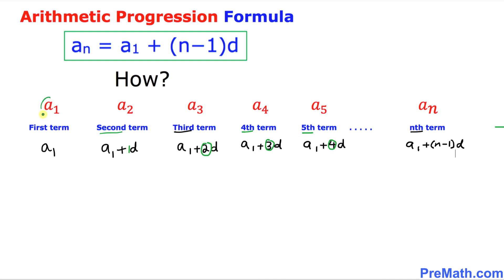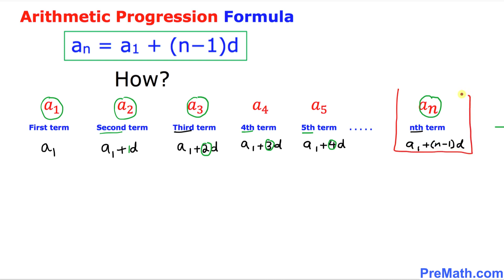We know that the first term is called a sub 1, the second term is a sub 2, the third is a sub 3, and the nth term is called a sub n. That means a sub n equals a sub 1 plus n minus 1 times d. That's what we got.